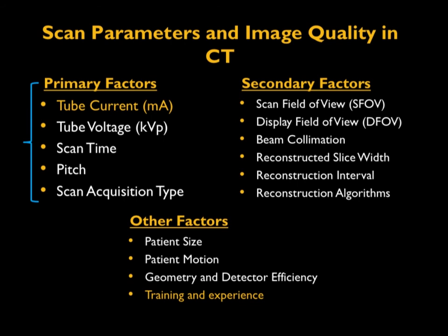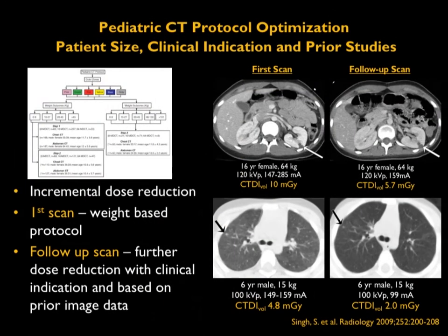Scan parameters and image quality in CT are grouped into different categories, which have been discussed in previous podcasts. For pediatric CT specifically, a number of studies—particularly on follow-up patients—have demonstrated that subsequent reductions in scan technique did not diminish the ability to diagnose clinical pathology. For example, a mass in the kidney shows up even at lower technique and lower radiation dose, so it is important to optimize the protocol based on the pathology being diagnosed.